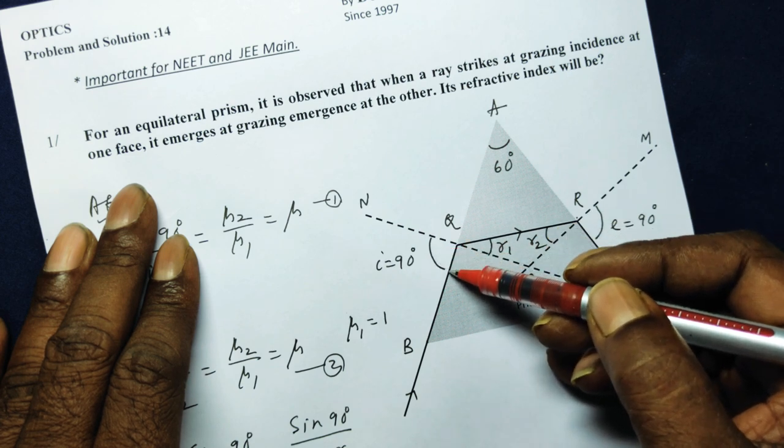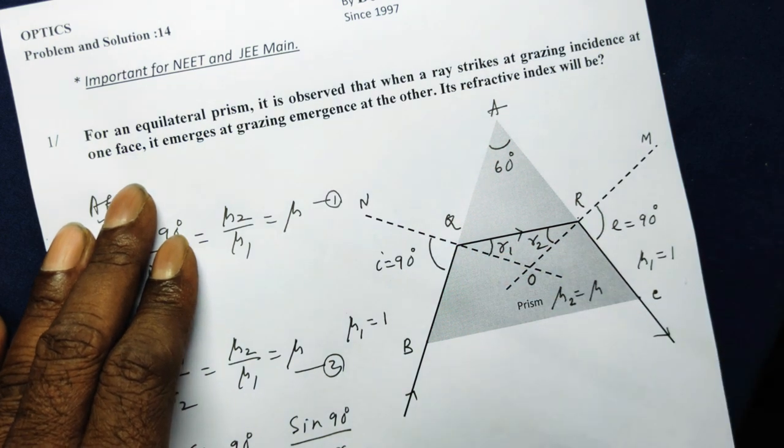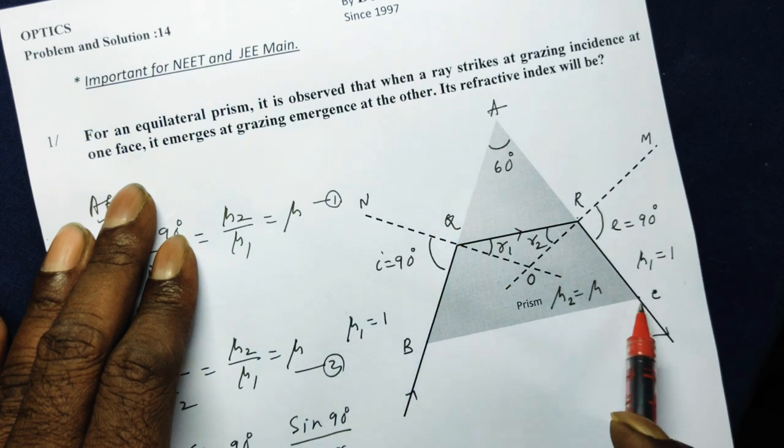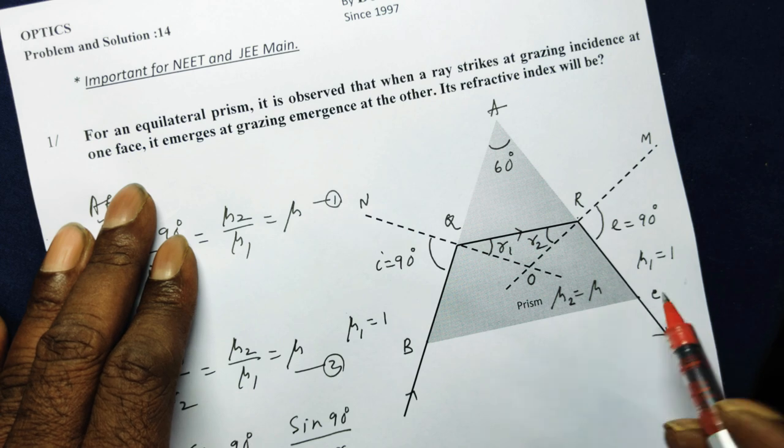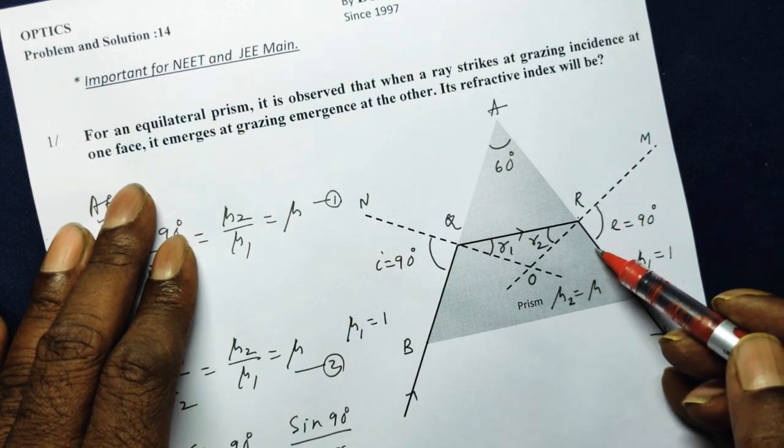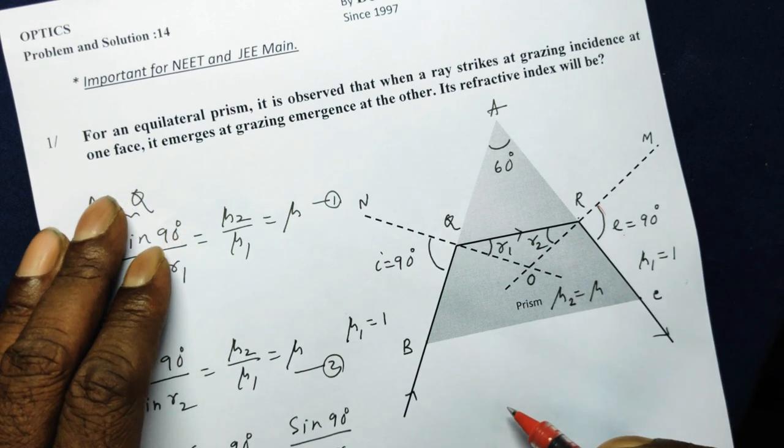A ray is incident on the side AB at grazing angle of incidence, means at angle of incidence 90 degrees. It is also given on the other side, the side AC, the final ray, the emergent ray, also has a grazing angle of emergence, means this E is also 90 degrees.